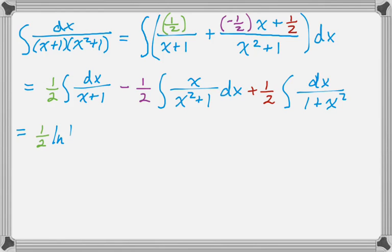So this will be 1 half natural log of the absolute value of x plus 1, and then minus 1 half, let u equal x squared plus 1, so there needs to be a 2x in the denominator, so 2, and then 1 half on the outside, 1 half natural log of the absolute value of x squared plus 1,